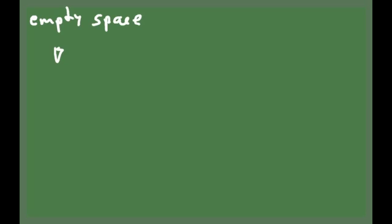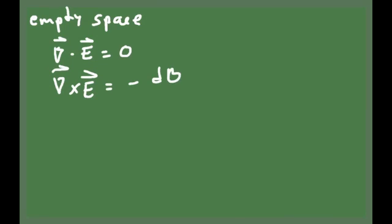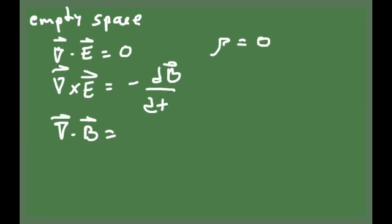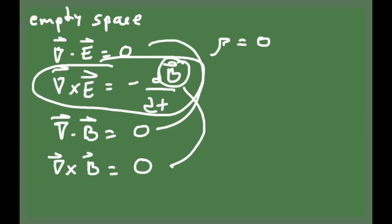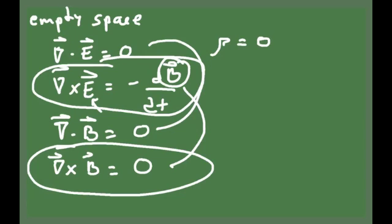When Maxwell looked at these equations as they apply for empty space, he noticed that there was an asymmetry between the electric field and the magnetic field. In empty space there is no charge density, so rho is zero. The divergence of B is still zero because there are no magnetic monopoles. And the curl of B equals zero. He noticed that two of the equations established a symmetry between E and B, but these last two equations were radically different. A change in magnetic field can produce an electric field, but there is no corresponding term showing a changing electric field generating a magnetic field.